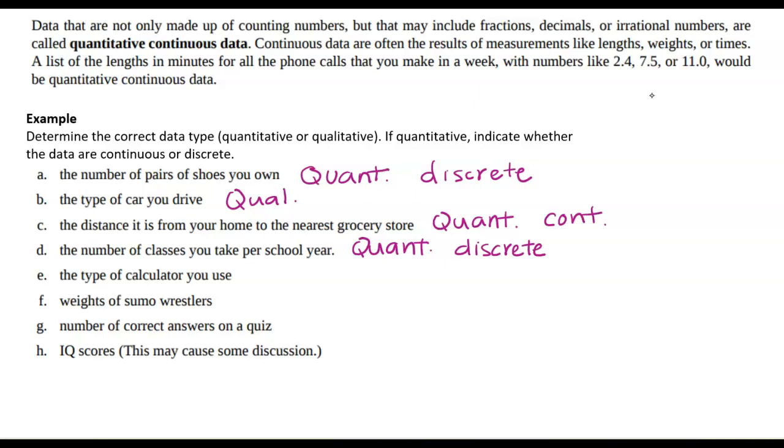The type of calculator that you use. That's going to be qualitative because it's a category or list of groupings. Weights of sumo wrestlers. That's going to be quantitative. We're measuring weights. And this is going to be continuous because the values themselves can have decimals.